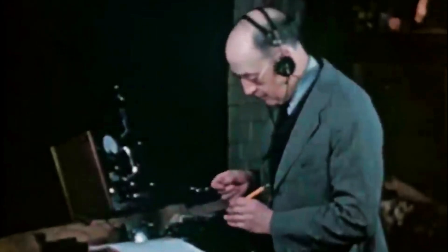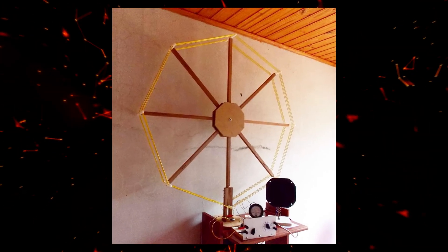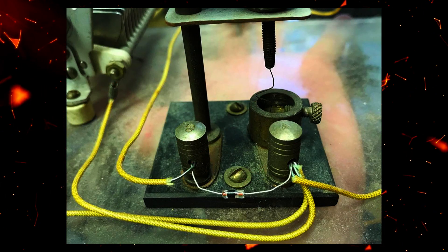Building a foxhole radio involves assembling a few basic components: an antenna, a coil, a capacitor, a diode, and an earpiece.